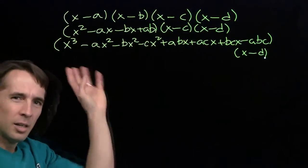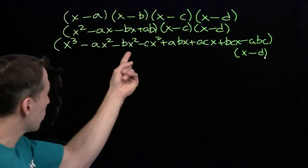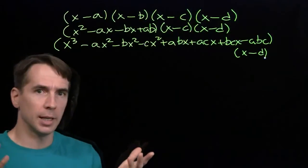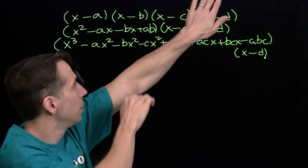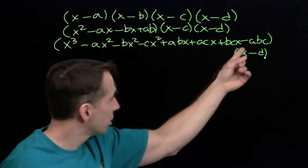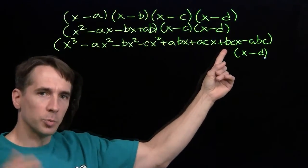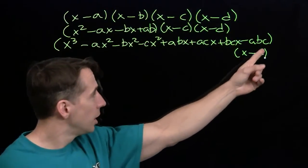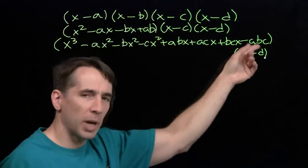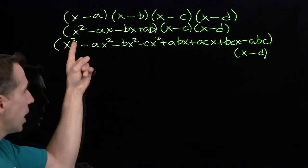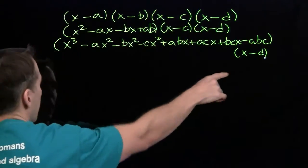Take a look at that — it should look familiar. We have x cubed up front, then the coefficient of x squared is minus a minus b minus c, which is the opposite of the sum of the three roots. The coefficient of x has roots taken two at a time: ab, ac, bc — all pairwise products added up. The constant term is the opposite of the product of the roots. Same pattern as before! Now let's extend this by multiplying by x minus d.